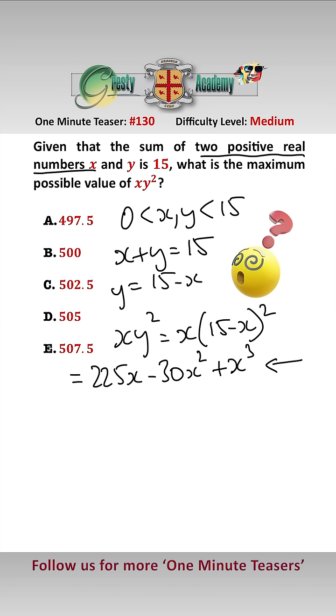Now to find the maximum value of that, we need to differentiate and assign it to 0. Differentiating this, we get 225 minus 60x plus 3x squared, and that will be 0 at the maximum.